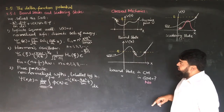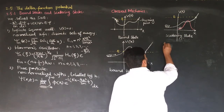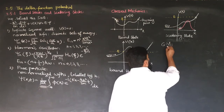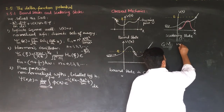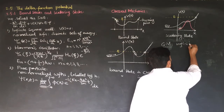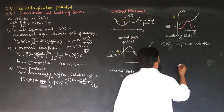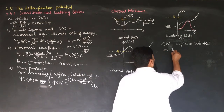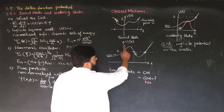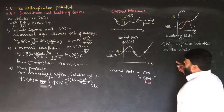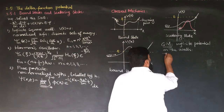Classically, a particle can be bound, but to bind a particle quantum mechanically, an infinite potential must be applied on the boundaries. If the potential is finite, the particle cannot be restricted because of the phenomenon of tunneling.